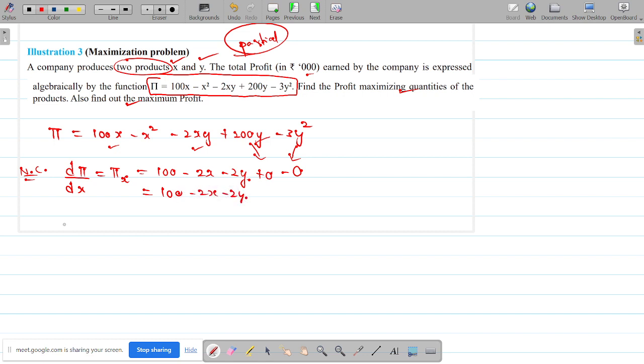This is ∂π. I am very sorry. This is ∂π by ∂X. Likewise I have to proceed with ∂π by ∂Y which I can write short as πᵧ. Now I bring differentiation with respect to partial differentiation with respect to Y. First one will vary, second one will vary. This will be minus 2Y plus 200 minus 6Y. Now I have to equate this to 0.